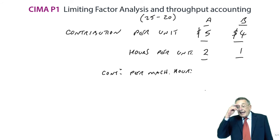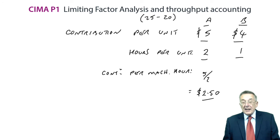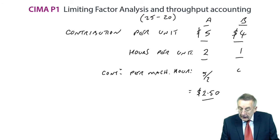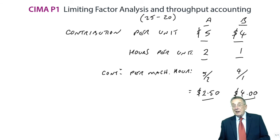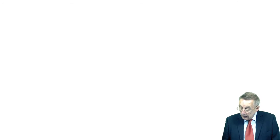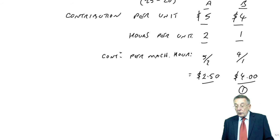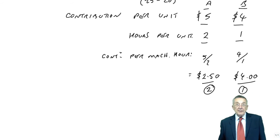So every hour spent making A, we get $5 for two hours, it generates $2.50 an hour. Whereas B, we get $4, takes one hour. Every hour spent making B generates $4. And therefore, the best use of our limited time, B is the best at $4 an hour. Second best is A at $2.50 an hour.